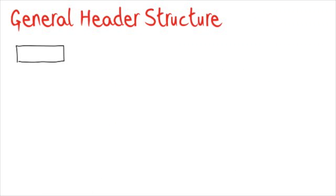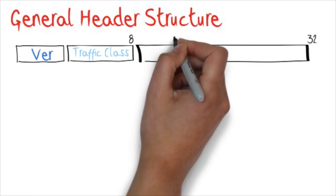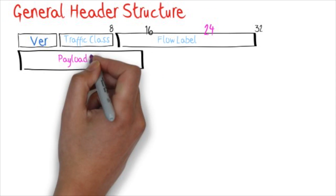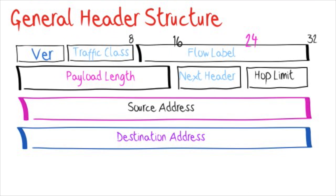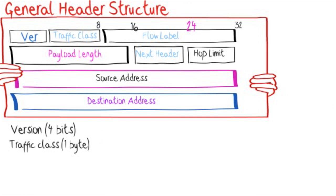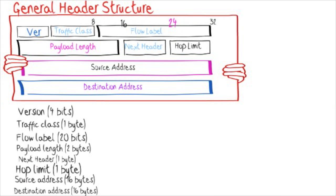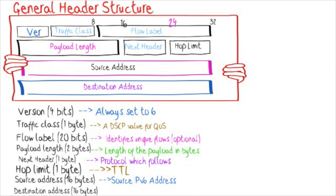General header structure: first 4-bits is version which is always set to 6, next 1-byte traffic class, 20-bits flow label, 2 bytes of payload length, 1 byte next header, 1 byte hop limit, 16 bytes of source address, and finally 16 bytes destination address.